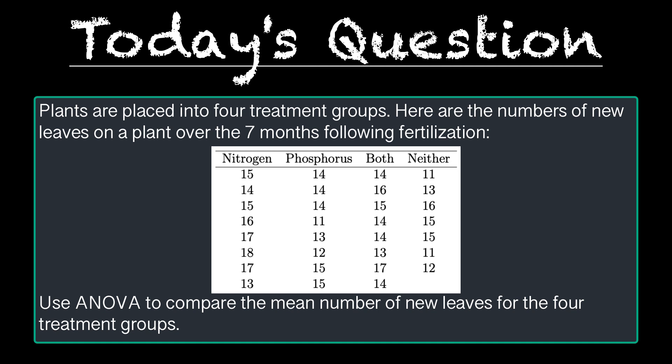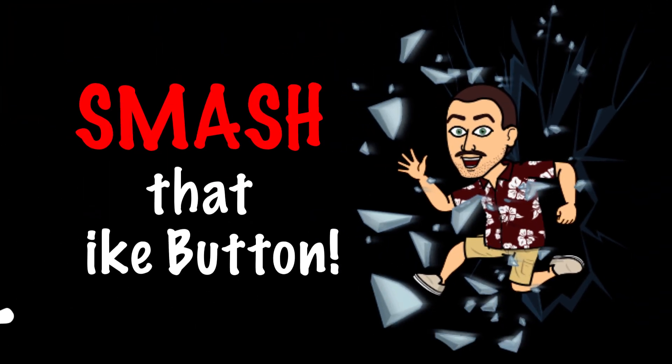Use ANOVA to compare the mean number of new leaves for the four treatment groups. Smash that like button and let's get started.